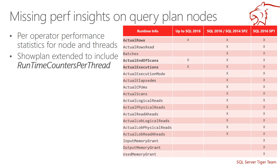In SQL 2016 SP1 we added three new properties: input memory grant, output memory grant, and used memory grant. These apply to hash operations — hash matches and hash aggregations — and also to sorts, to give you added information about the memory use of these sometimes memory-hungry operators. Note that these last three are not yet exposed in SSMS, although if you right-click a plan and go to Show Execution Plan XML, you'll see the three properties there.